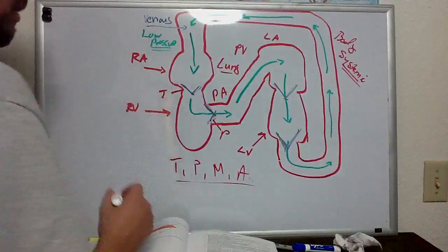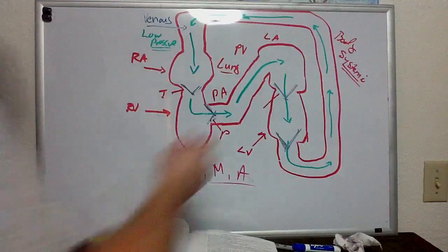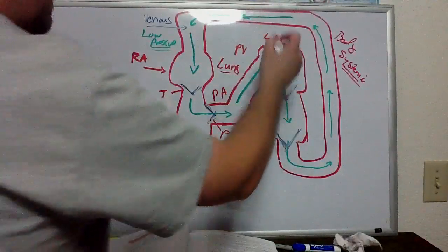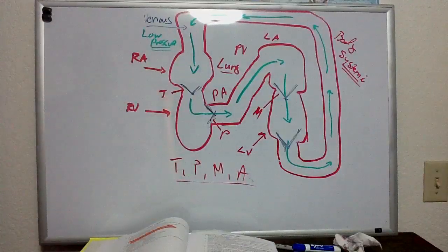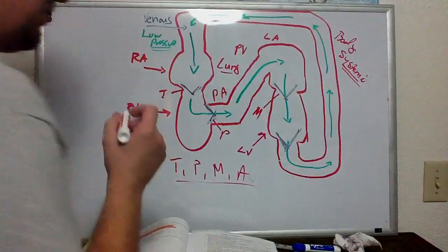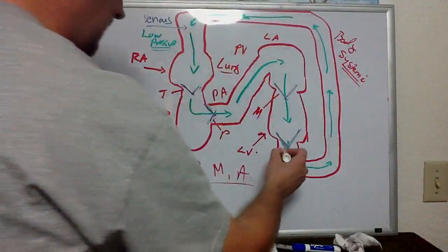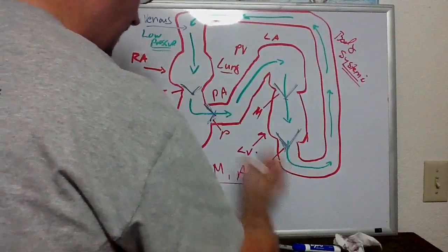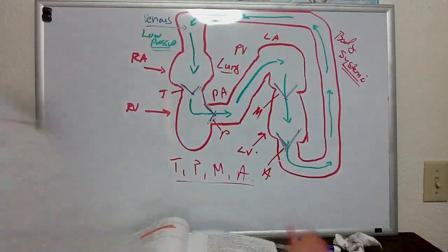The third valve is the mitral valve, which separates the left atrium from the left ventricle, the mitral valve. Toilet paper my mitral. And then the fourth valve, which separates the left ventricle from the rest of the body, is the aortic semi-lunar valve. So those are the valves.